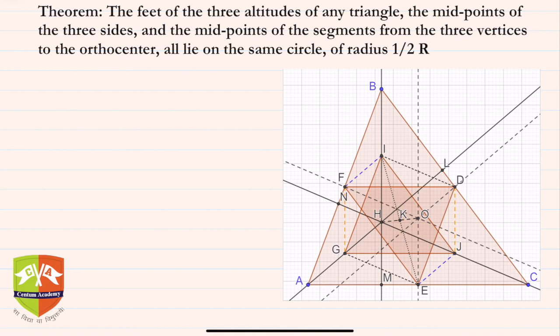Welcome friends to another session on Gems of Geometry. As discussed in the previous session, we are now going to prove that the nine-point circle exists. In the previous session we saw what a nine-point circle is, and in this session we are going to prove it exists and that all nine points lie on it.